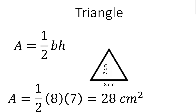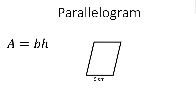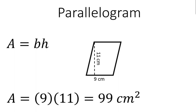Next I have a parallelogram. The area of a parallelogram is equal to base times height. I have the base labeled here, which is 9 centimeters. The dashed line is going to be the height, which is 11 centimeters. Substituting into the formula, 9 times 11 equals 99 centimeters squared.